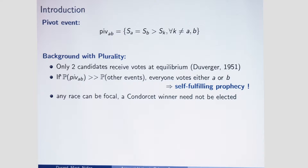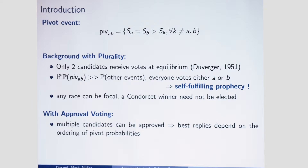Can we do better with approval voting? There are a couple of difficulties. The first is that multiple candidates can be approved, so the behavior of the voter is more complicated, and the best reply depends not only on the main pivot but on the ordering of all pivot events. The second difficulty is that because a single voter can approve several candidates, the scores of the candidates will be correlated, so computing the probability of a pivot will be more complicated.